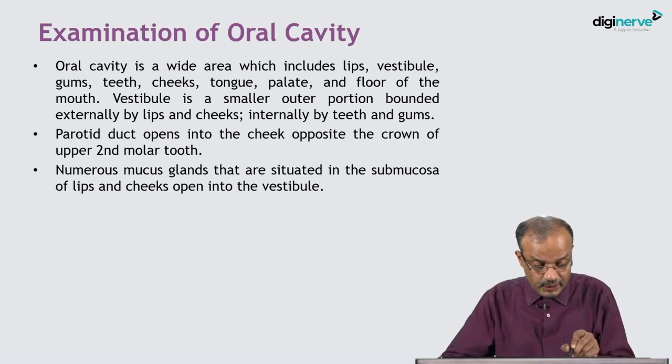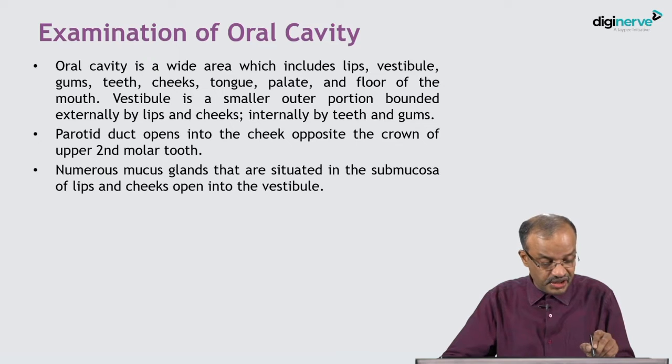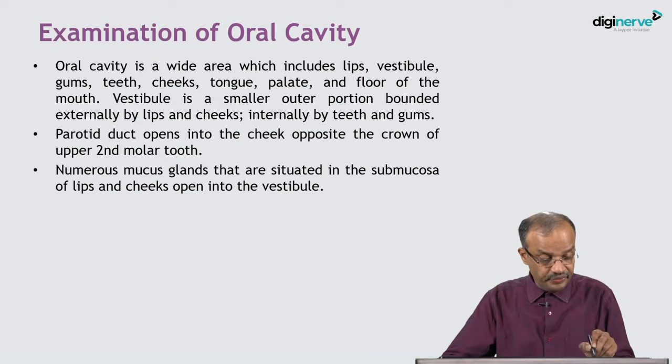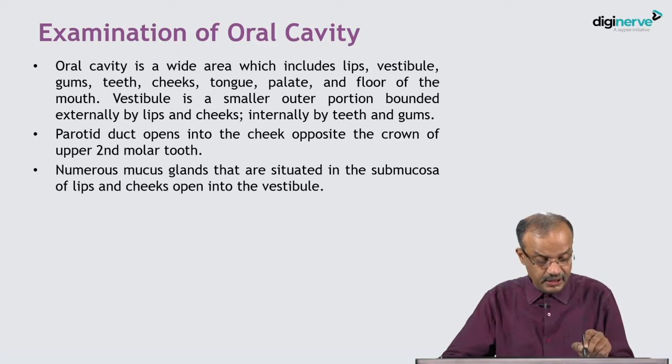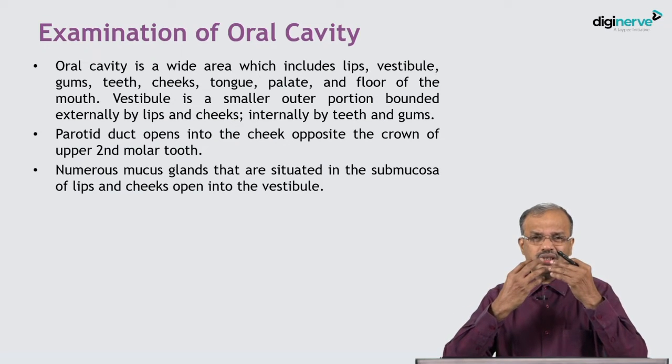The oral cavity is a wide area which includes the lips, vestibule, gums, teeth, cheeks, tongue, palate, and floor of the mouth. The vestibule is a small outer portion bounded externally by lips and cheeks, and internally by teeth and gums. It is outside of the teeth but within the lip — a clear space from posterior to anterior — and then the teeth come.